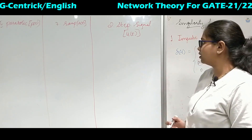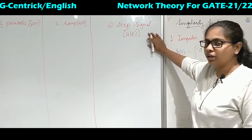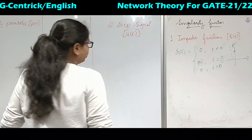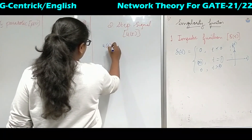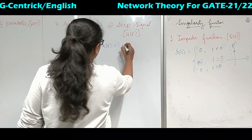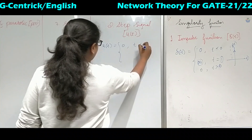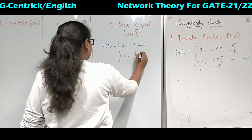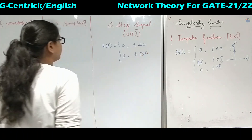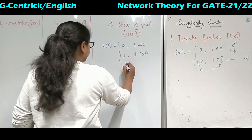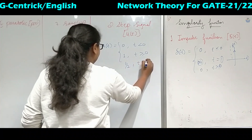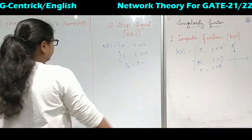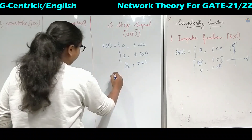Coming to the step signal, that is nothing but the unit step function, denoted by u of t. We can define it as: 0 for t less than 0, 1 for t greater than or equal to 0, and 1/2 at t equal to 0. This last condition is using Gibbs phenomenon.